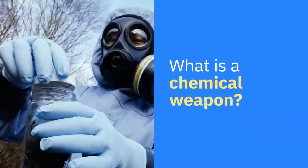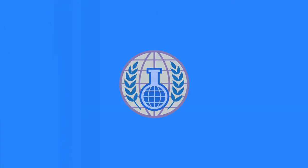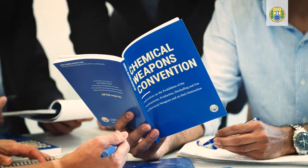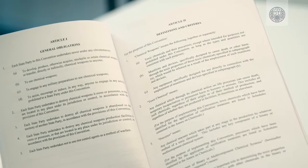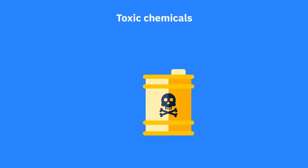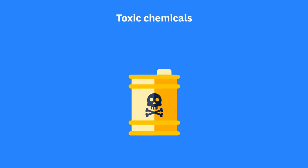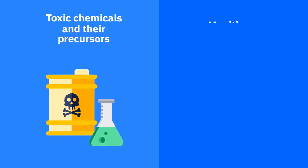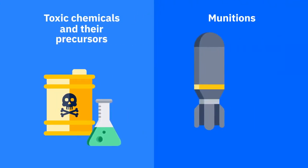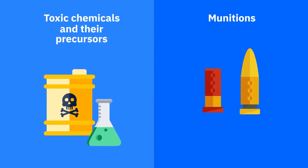What is a chemical weapon? According to the Chemical Weapons Convention, a chemical weapon is any toxic chemical that can cause death or harm to humans or animals through its chemical action on life processes, any chemical precursor used to produce a toxic chemical, or any munitions or devices designed to inflict harm or cause death through the release of toxic chemicals.